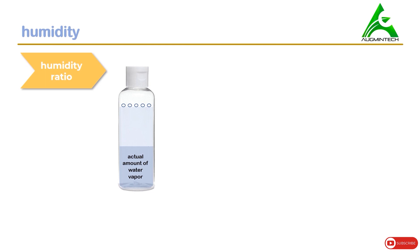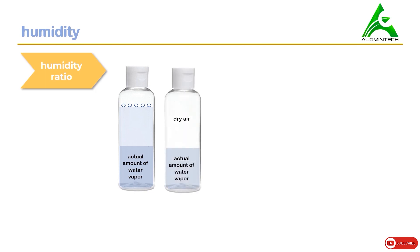Humidity ratio is an important concept. In a sample of unsaturated air, the dark blue region represents the amount of actual water vapor present, and from the bottom of the bottle up to the holes shows the maximum amount of moisture the air can hold. In another diagram, a sample of air is shown with a dry air section and some amount of moisture present.